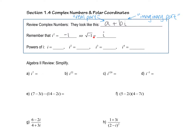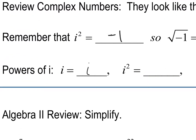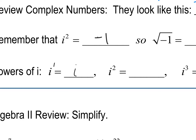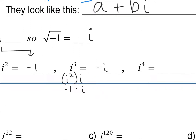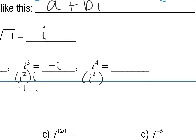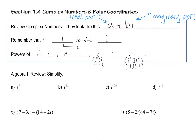Remember from Algebra 2 that i squared equals negative 1, and therefore the square root of negative 1 is just i. Powers of i: i to the first is just i; i squared by definition is negative 1; i to the third is the same as i squared times i, which is negative 1 times i, so negative i; and i to the fourth is i squared times i squared, which is negative 1 times negative 1, which equals 1.